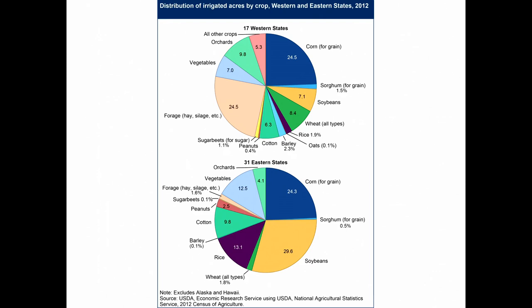This is what irrigation is used to grow. One interesting thing I found — I only had YouTube that would tell me this — this shows all the cash crops and irrigation by cash crop for different states, divided east-west. If you were to take corn and wheat together across the U.S., there's another crop not listed that is more than corn and wheat combined. And that's turf grass — lawns, golf courses, things like that.